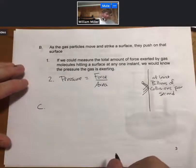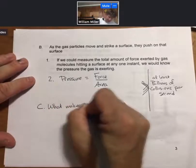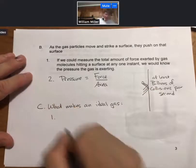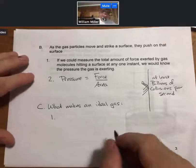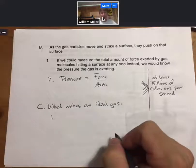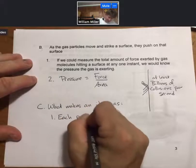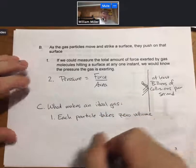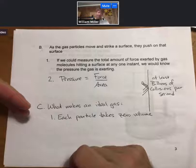What I'd like to cover next is what makes an ideal gas. For an ideal gas, there are two things in particular. First, each particle takes no volume. Each particle takes zero volume. We talked about how each particle takes a very tiny amount of the volume of the container, but in the limit of an ideal gas, each particle takes zero volume.